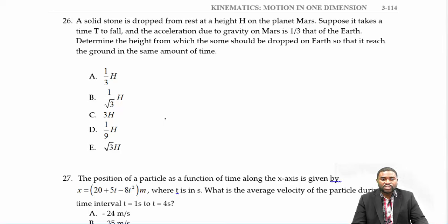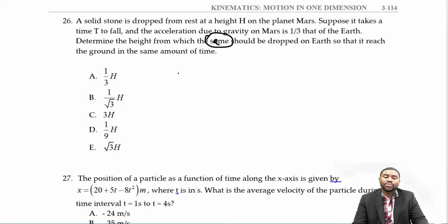Problem 26: A solid stone is dropped from rest at height h on planet Mars. Suppose it takes time t to fall, and the acceleration due to gravity on Mars is one-third that on Earth. Determine the height from which the stone should be dropped on Earth so that it reaches the ground in the same time. We know that h = ½gt².